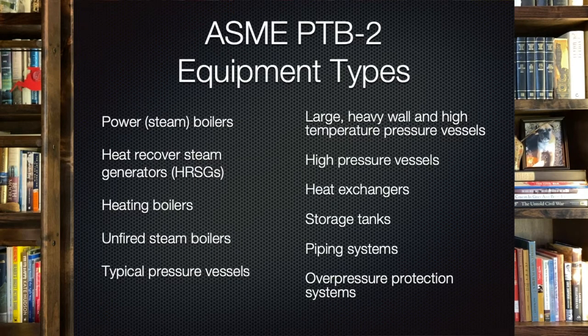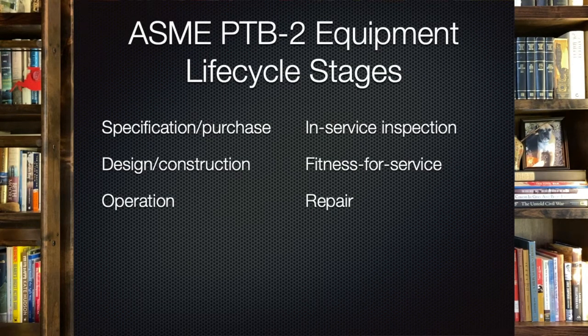As promised, I want to tell you about two really good documents. One is ASME PTB-2, Guide to Lifecycle Management of Pressure Equipment Integrity — kind of a RAGAGEP for pressure equipment RAGAGEPs. It's organized by equipment type: all different types of boilers, typical pressure vessels, large heavy-wall and high-temperature pressure vessels, heat exchangers, storage tanks, piping, and overpressure protection. For each equipment type, they spell out the RAGAGEPs for different lifecycle stages: specification and purchase, design and construction, operation, in-service inspection, fitness for service, and repair. It's a really good resource for fixed equipment.